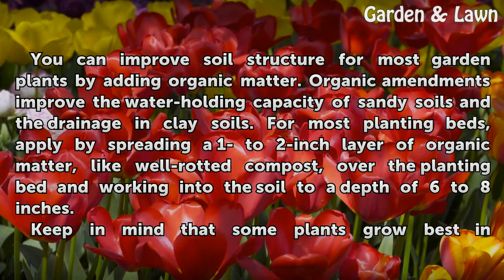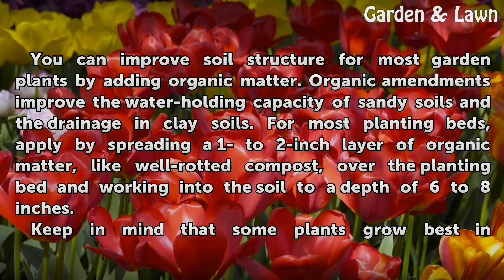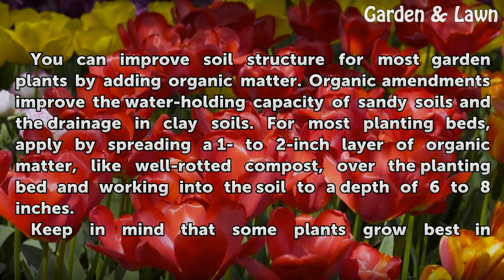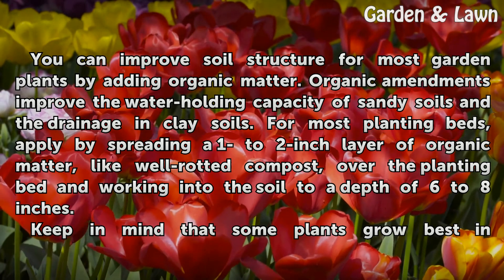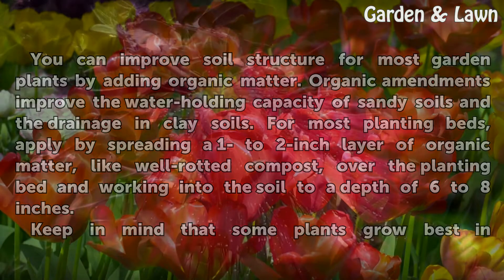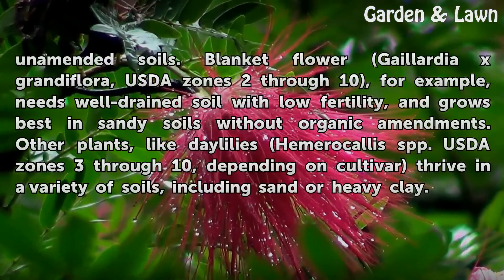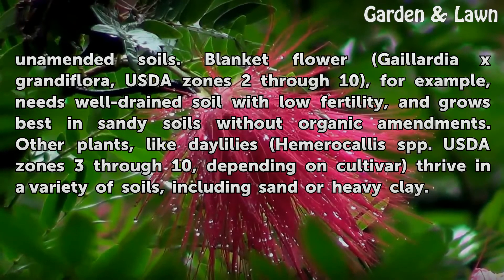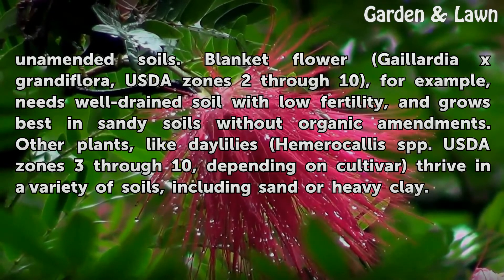For most planting beds, apply organic matter by spreading a one- to two-inch layer of well-rotted compost over the planting bed and working it into the soil to a depth of six to eight inches. Keep in mind that some plants grow best in unamended soils. Blanket flower (Gaillardia x grandiflora, USDA zones 2 through 10), for example, needs well-drained soil with low fertility and grows best in sandy soils without organic amendments.